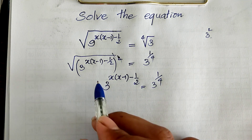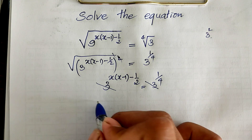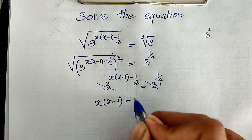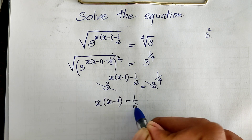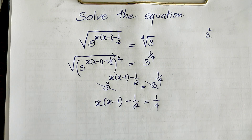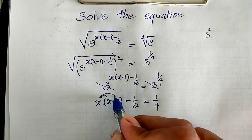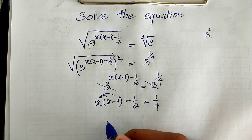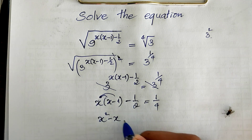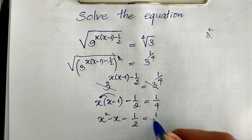Since the bases are both 3, we cancel them out. So we get h(h minus 1) divided by 2 minus 1 divided by 2, equal to 1 divided by 4. Multiplying through, we get h squared minus h minus 1 divided by 2, equal to 1 divided by 4.